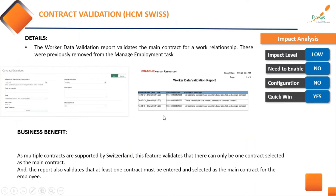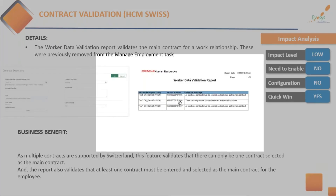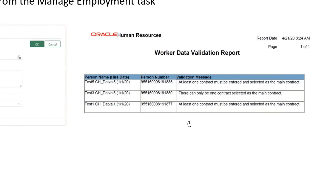For customers from Switzerland — the worker data validation report now provides information on whether there is a main contract against the worker relationship. Multiple contracts are supported in Switzerland, so this report helps them verify that at least one contract exists. If there's no contract, the report identifies that early, enabling early identification of missing contract data.